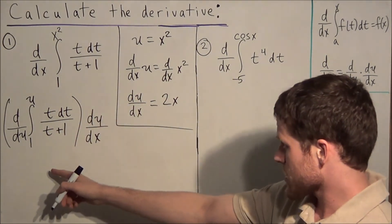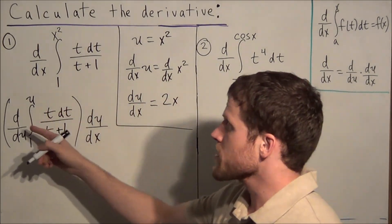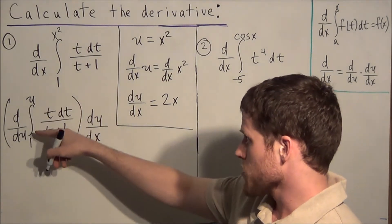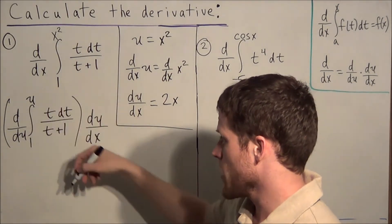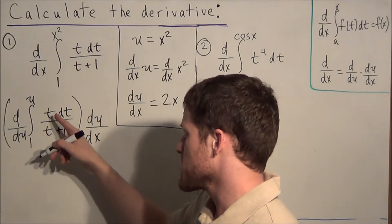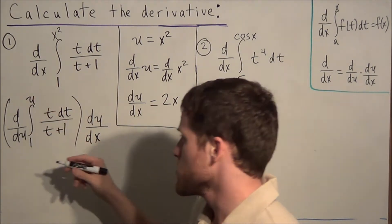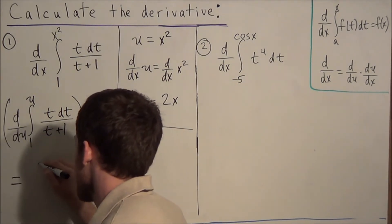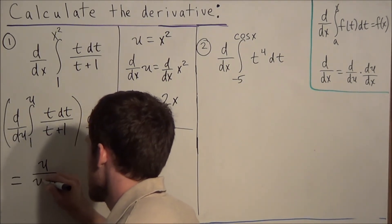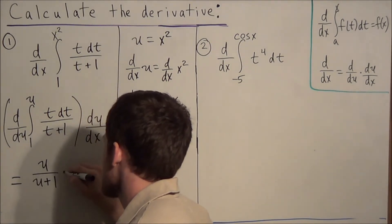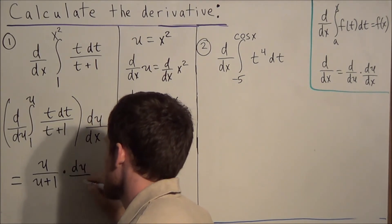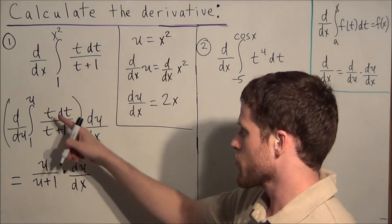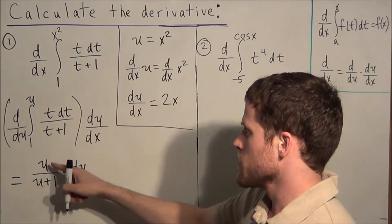Now we can use the second fundamental theorem. The d/du and the integral from 1 to u cancel out, and all we have to do is replace the variable t with the variable u. So our next step gives us u/(u+1) times du/dx. To use the second fundamental theorem, all we need to do is replace t with u.